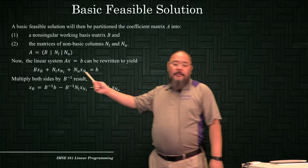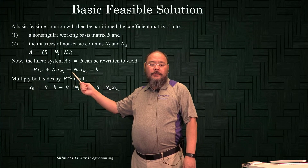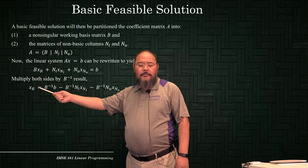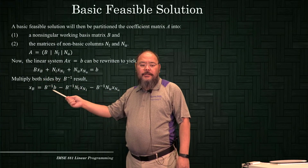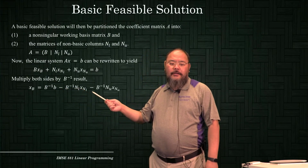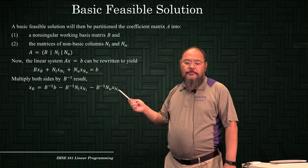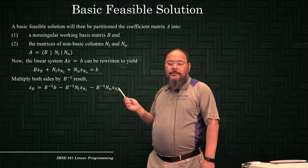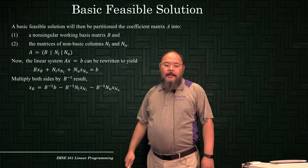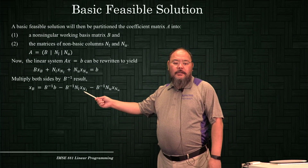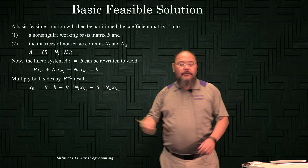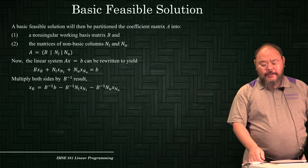Multiplying both sides by B-inverse and rearranging, the current basic variable values are: xB = B⁻¹b − B⁻¹·NL·xNL − B⁻¹·NU·xNU. In standard LP these two terms equal zero since non-basic variables take value zero, but in the bounded variable simplex method the lower and upper bounds may not be zero, so we must include them in the calculation.